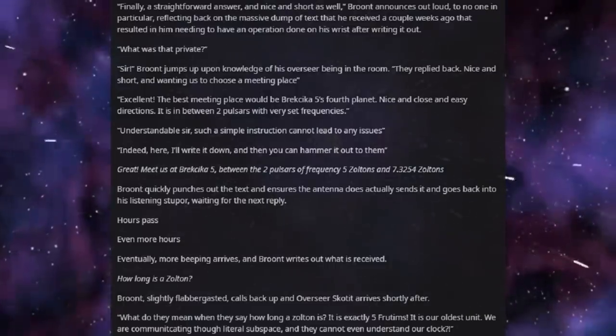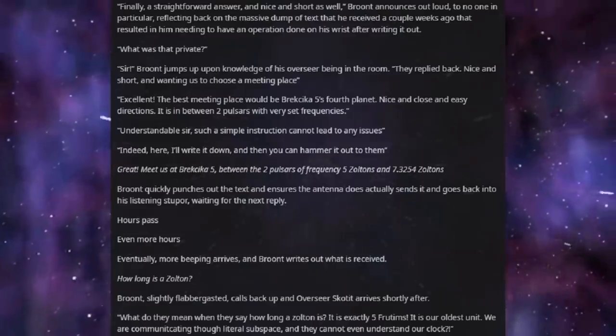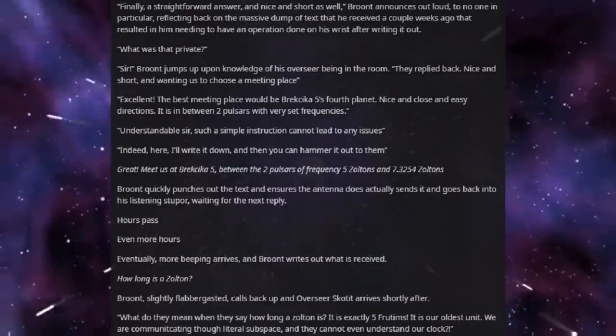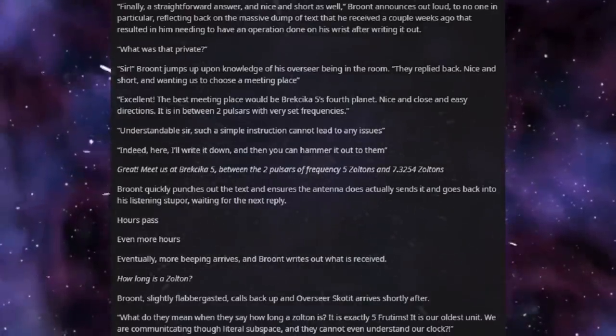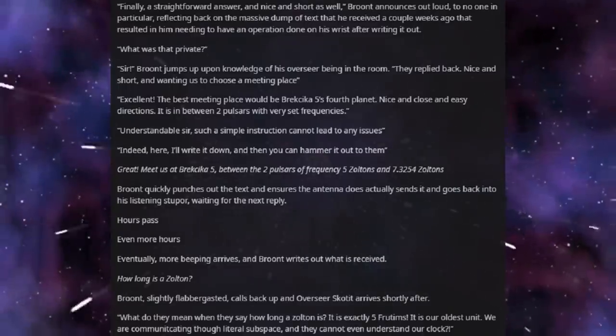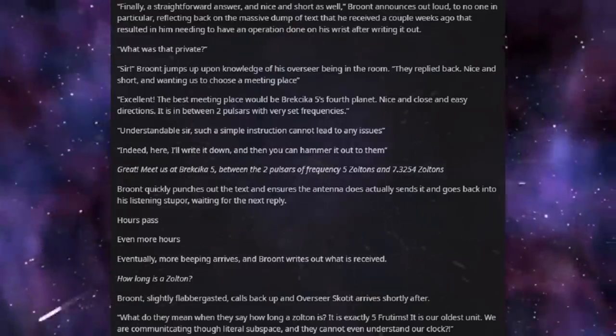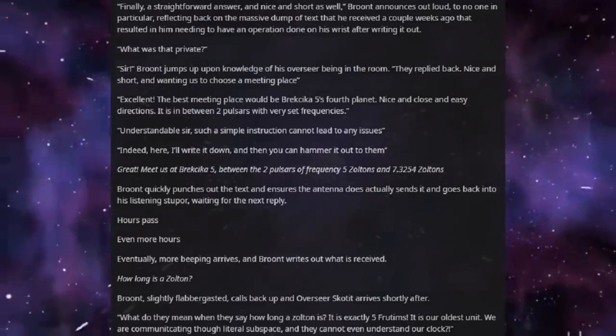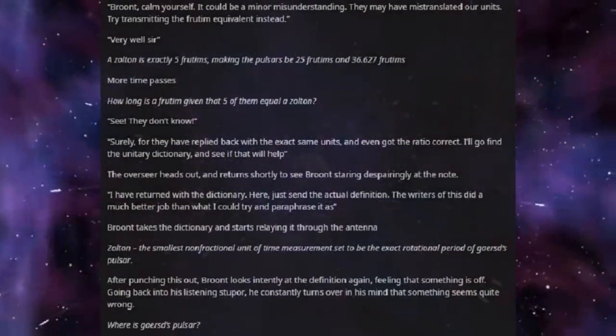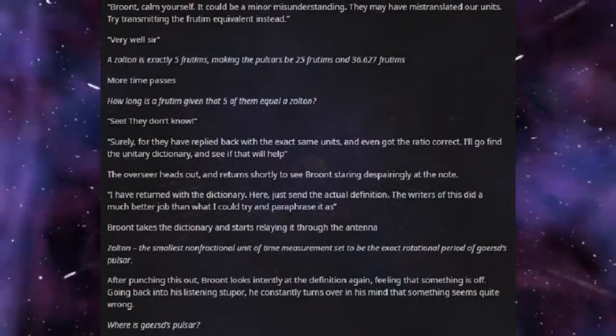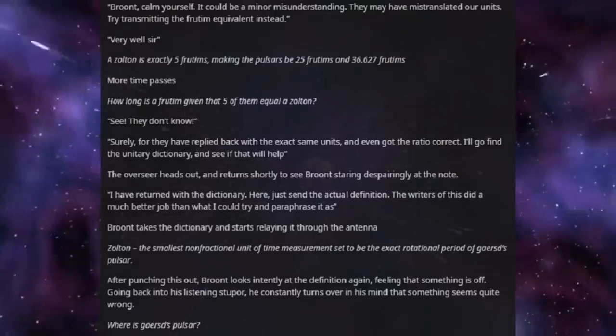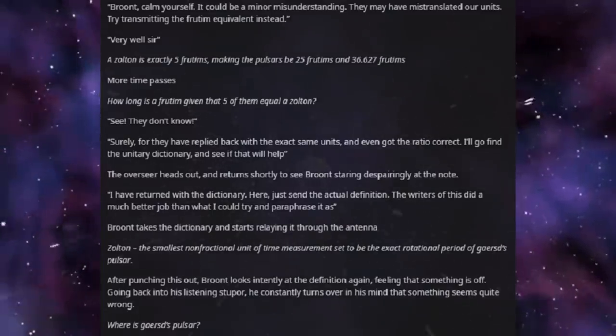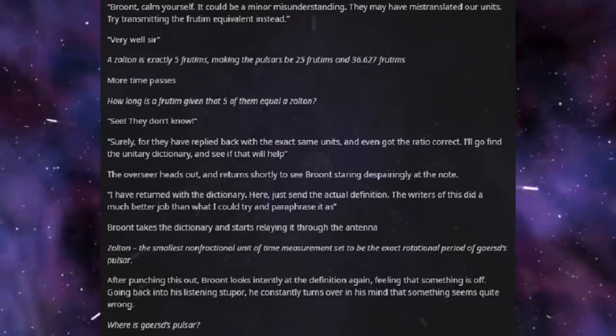Hours pass. Even more hours. Eventually, more beeping arrives, and Brundt writes out what is received. How long is a Zolton? Brundt, slightly flabbergasted, calls back up and Overseer Scottit arrives shortly after. What do they mean when they say how long a Zolton is? It is exactly five Thrutons. It is our oldest unit. We are communicating through literal subspace, and they cannot even understand our clock.